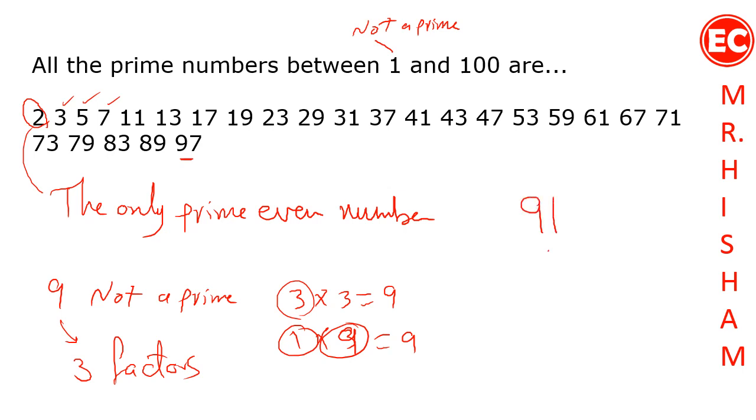Notice that 91 is not a prime number because 91 is divisible by 7 or 13.